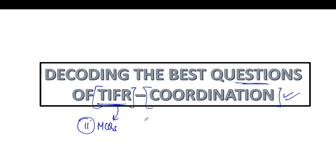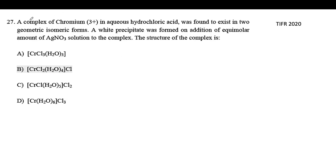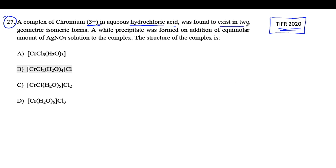The first question is from TIFR 2020, and from here we move backwards chronologically through 2019, 2018, 2016, and so on. The question states: a complex of chromium(III) in aqueous HCl was found to exist in two geometric isomeric forms. A white precipitate was formed on the addition of an equimolar amount of AgNO3 solution to the complex. Find the structure of the complex.